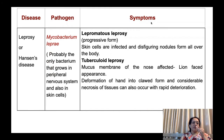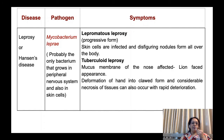The next disease caused by bacteria is leprosy, also called Hansen's disease. Mycobacterium leprae is the causative agent — probably the only bacterium that grows in the peripheral nervous system and also in skin cells. Symptoms are divided into two categories: in lepromatous leprosy, which is the progressive form, there is formation of disfiguring nodules all over the body; while in tuberculoid leprosy, the mucous membrane of the nose is affected, giving a lion-faced appearance. Deformation of hands into a clawed form and considerable necrosis of tissues can also occur.